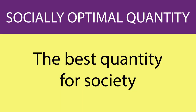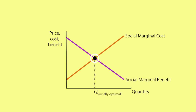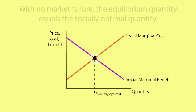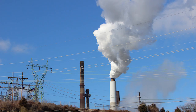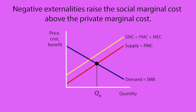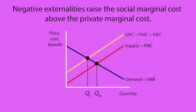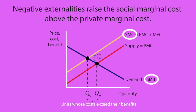The social marginal cost is the private marginal cost plus the marginal external cost. The socially optimal quantity is the best quantity for society, found at the intersection of the social marginal cost curve and the social marginal benefit curve. In the absence of externalities and other sources of market failure, the supply curve coincides with the social marginal cost curve, the demand curve coincides with the social marginal benefit curve, and the equilibrium or market quantity is the socially optimal quantity. Negative externalities cause the social marginal cost curve to lie above the private marginal cost curve, which means the market quantity exceeds the socially optimal quantity — the economy has units of the good that impose costs on society that exceed their benefits.